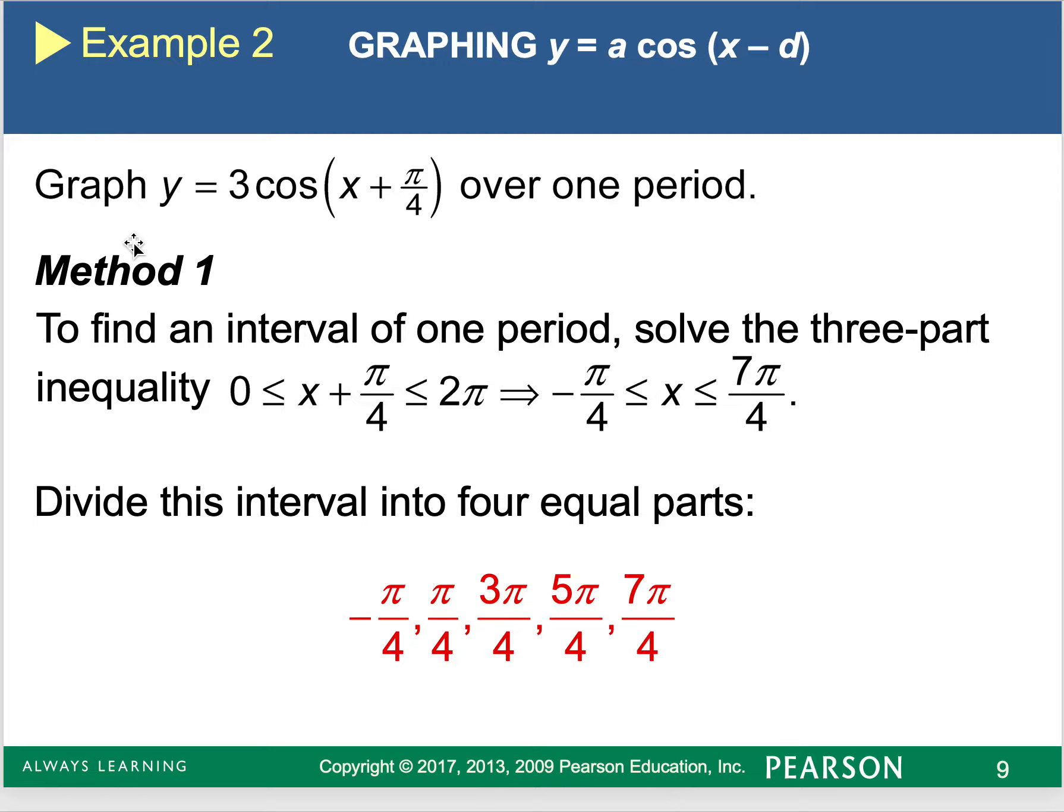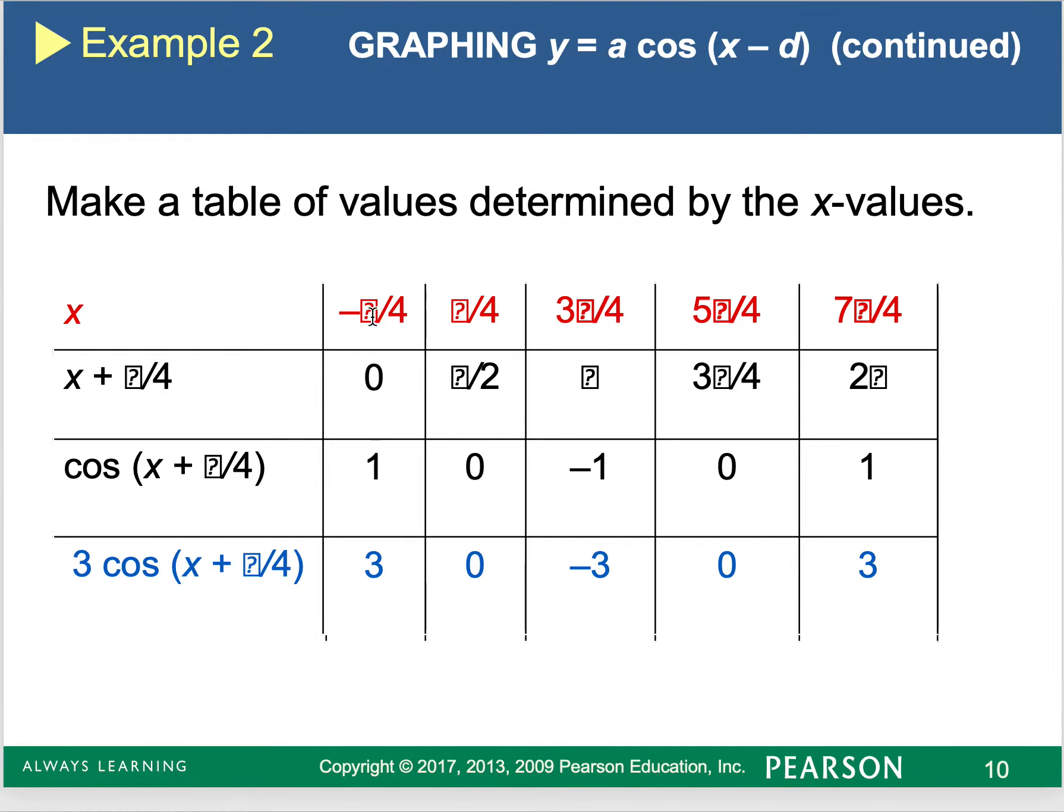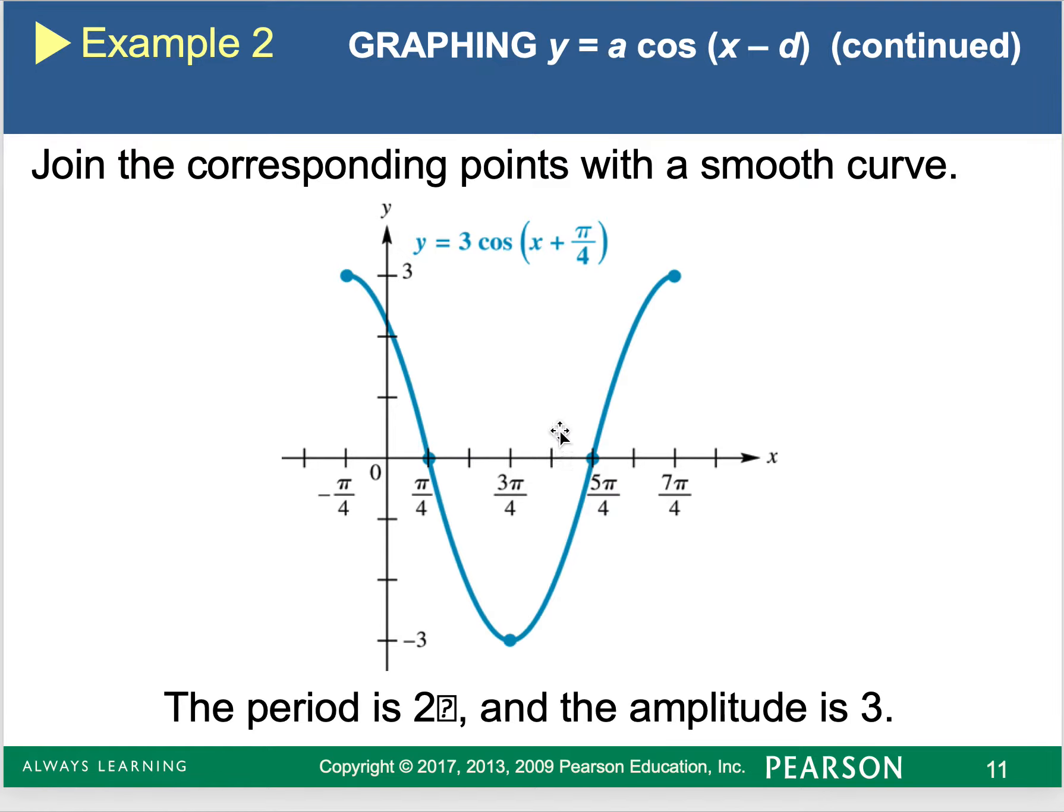Now, if I have 3 cosine of x plus π over four, I'm going to the left by π over four. I've also changed my amplitude to be from negative three to positive three. So I haven't shifted my period. There's nothing in front of the x value. So I'm going to take zero and 2π, and I'm going to subtract π over four from them to get it to move to the left. Then I would divide it into four equal parts, and I would create my table to get my y values. And this would be my final graph.